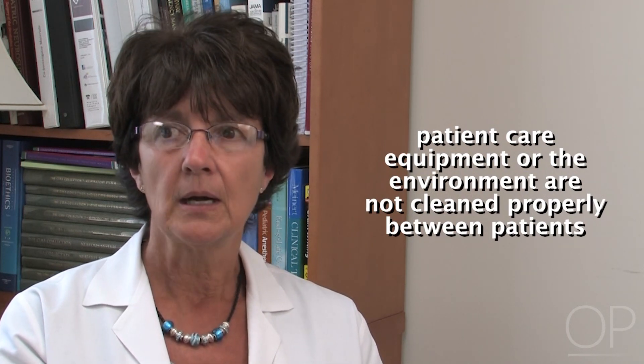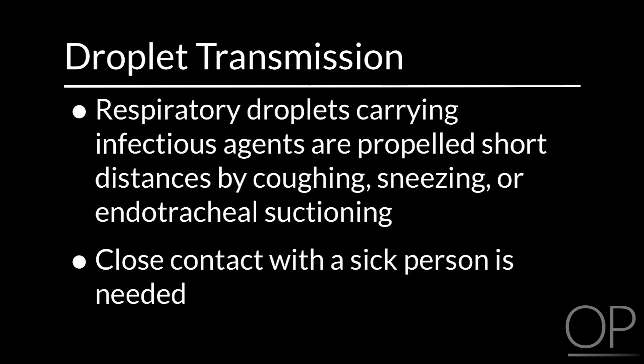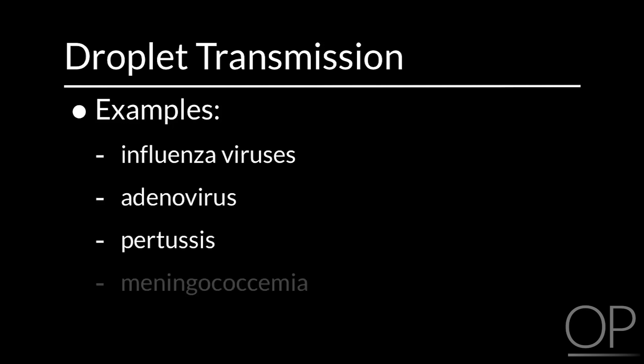Indirect contact transmission can also occur when patient care equipment or the environment are not cleaned properly between patients. Infectious agents can be spread when doctors, nurses, and other health care workers do not clean their hands when leaving a patient's room. Droplet transmission occurs when respiratory droplets carrying infectious agents are propelled short distances by coughing, sneezing, or endotracheal suctioning. These agents may cause infection when they enter the nose, eyes, or mouth of a susceptible person. Close contact with a sick person is needed. Examples of pathogens spread by droplet transmission include influenza viruses, adenovirus, pertussis, and meningococcemia.